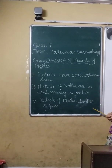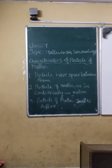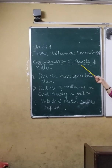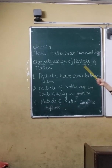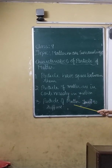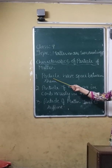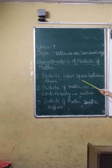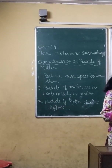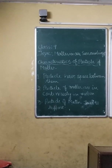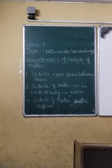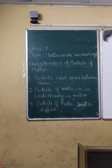We have concluded that matter is made up of extremely small particles. Now we will be trying to find out the characteristics of these particles. The first characteristic is that particles have space between them. When the particles of matter are arranged, there lies some space between them, and that space we call as intermolecular space.